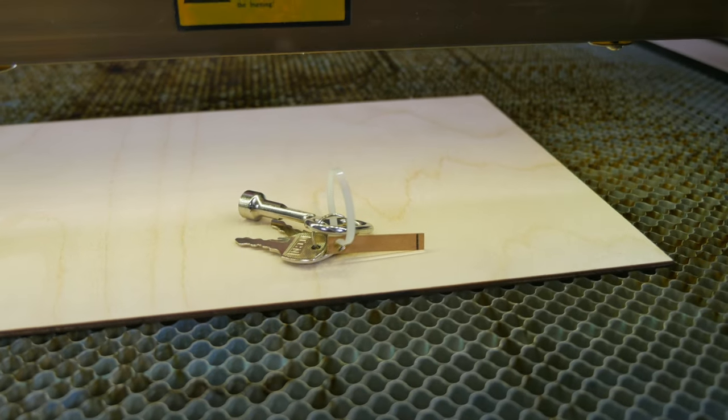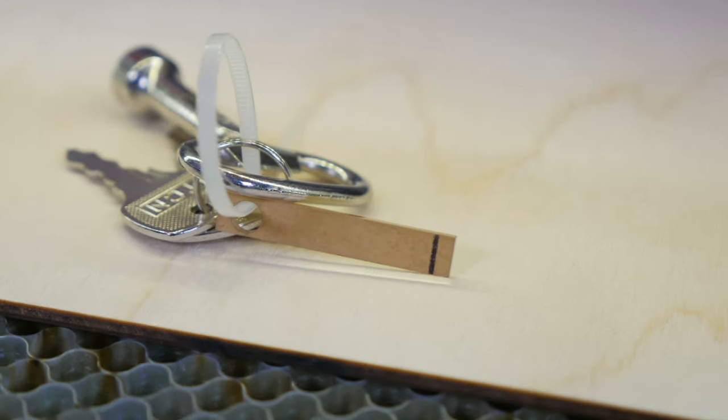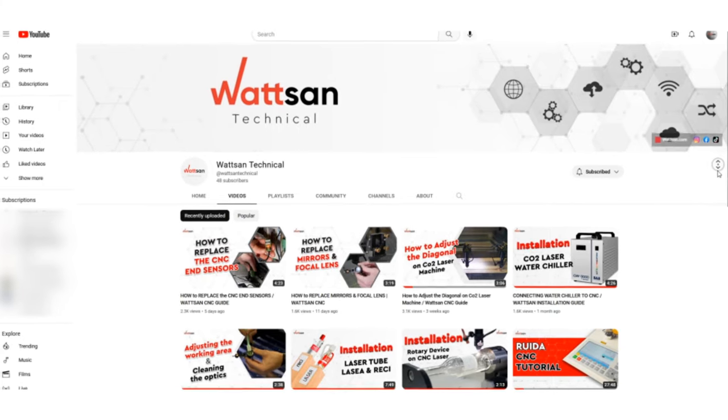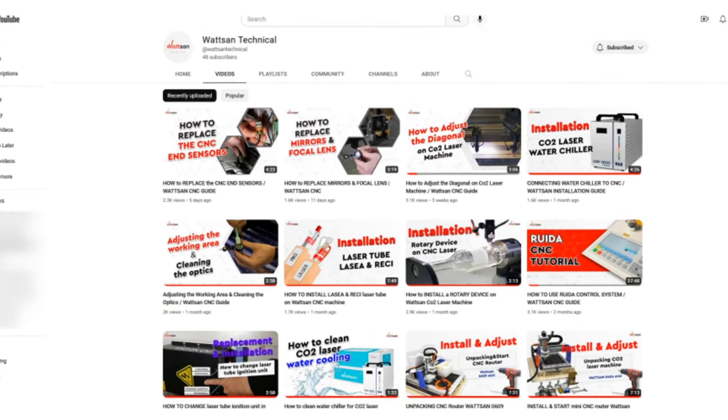Our machines are always equipped with a piece of acrylic with the set focal length. On Watson Technical, you can find the video on how to set the correct focal length when starting the machine for the first time.